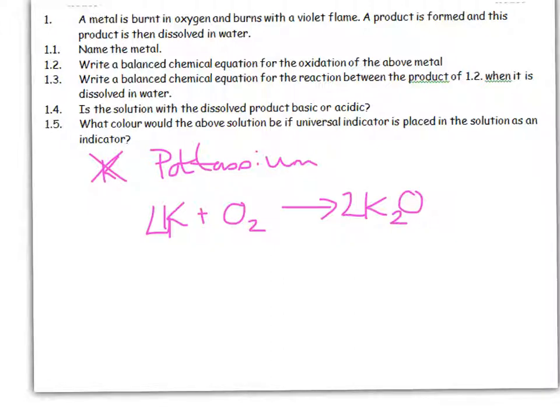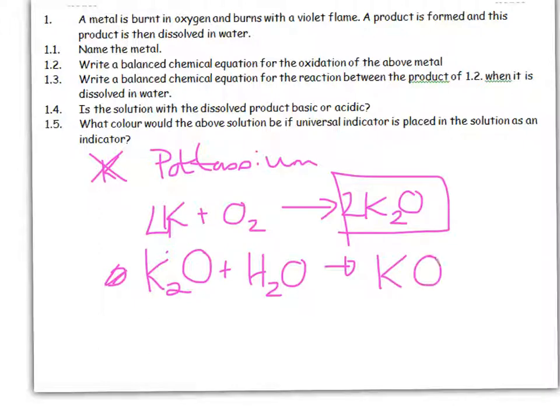Write a balanced chemical equation for the reaction of the product of 1.2 when it is dissolved in water. So I'm going to go, not 2, I'm just going to say potassium oxide in water is going to give me potassium hydroxide. And in order to balance that, I need a 2 in front.